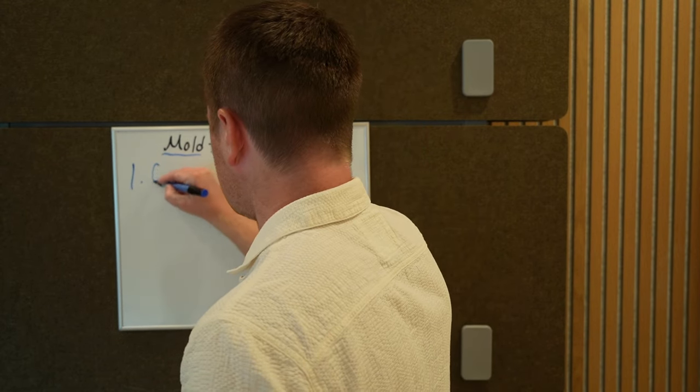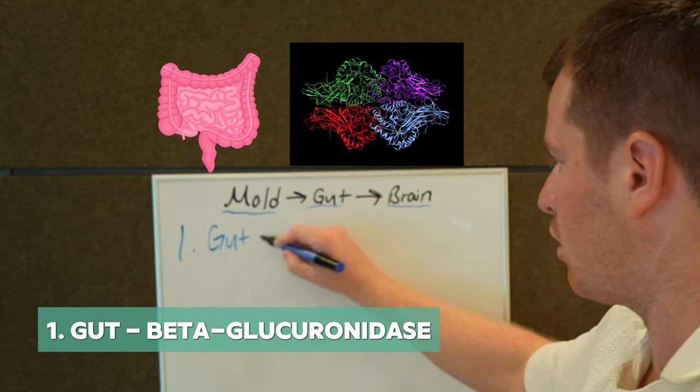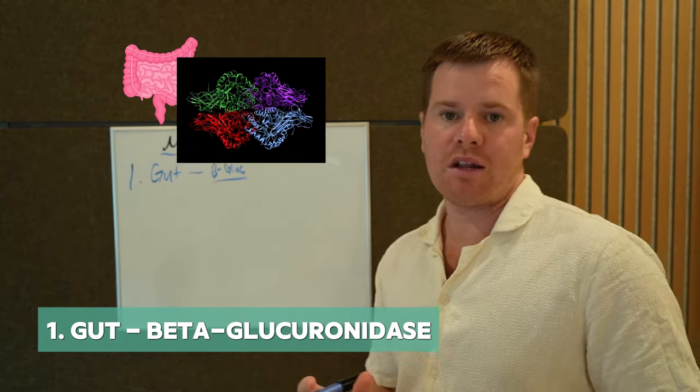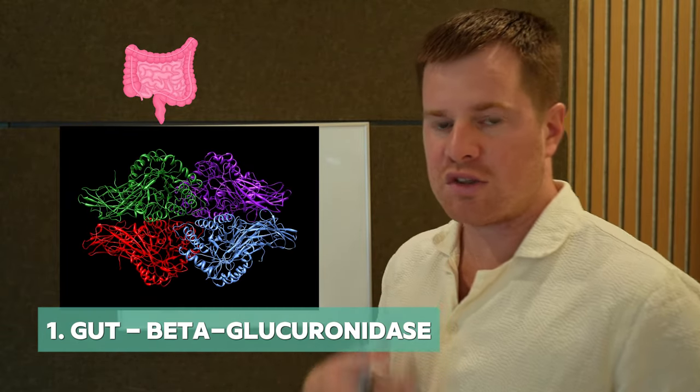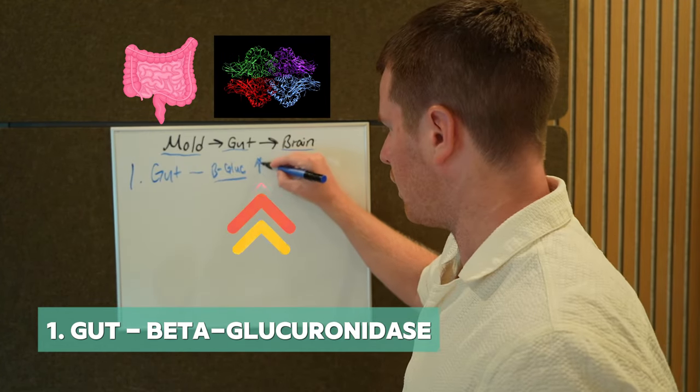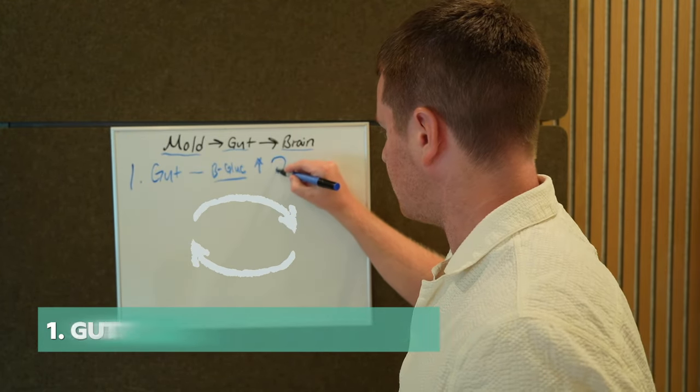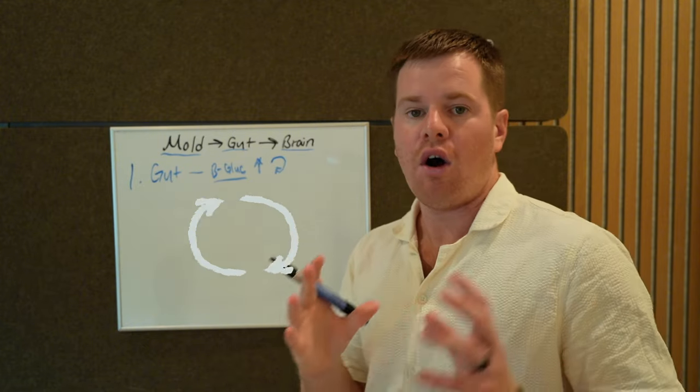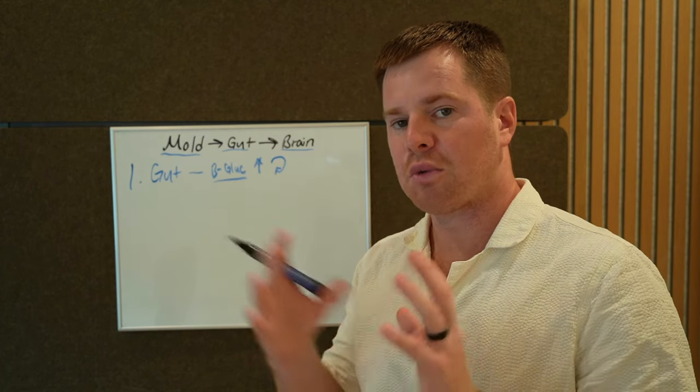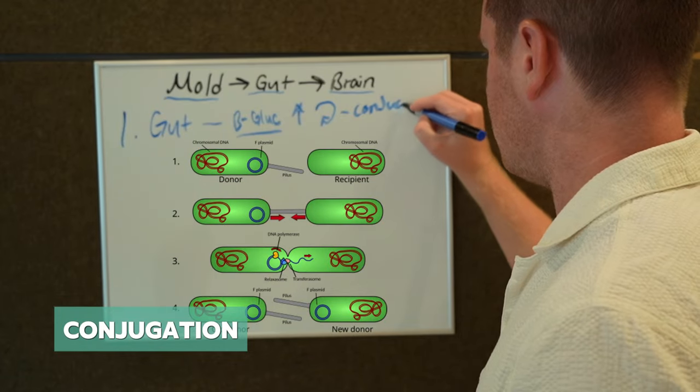So the first thing we do is we look at the gut, and there's a specific marker called beta glucuronidase. We're just going to do B-G-U-L-C for short. Beta glucuronidase is tested on the stool. We send this stool sample back to a lab in Georgia, and if we have elevated beta glucuronidase, what's going to happen is you're actually going to recirculate your toxins. So I'll just draw a little arrow going into itself. All of your toxins, including mold, pesticides, and even hormones, they get excreted out of the body through a process called conjugation.